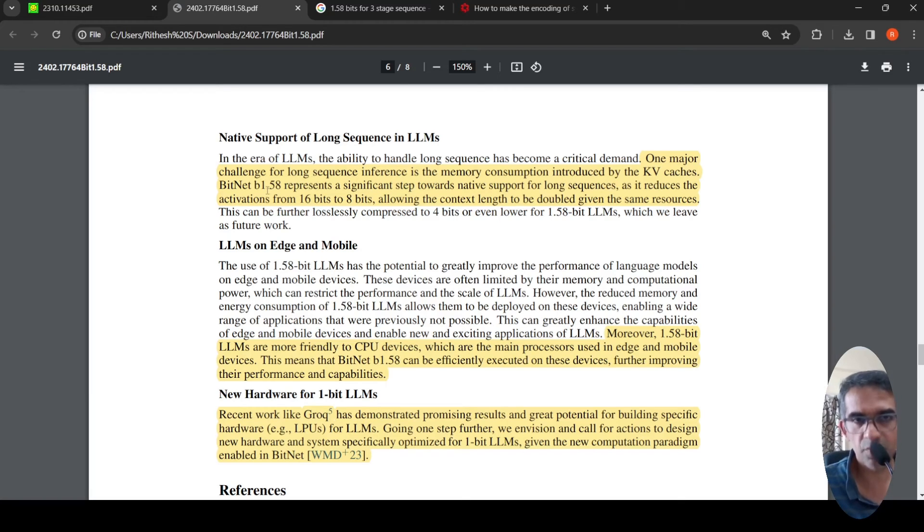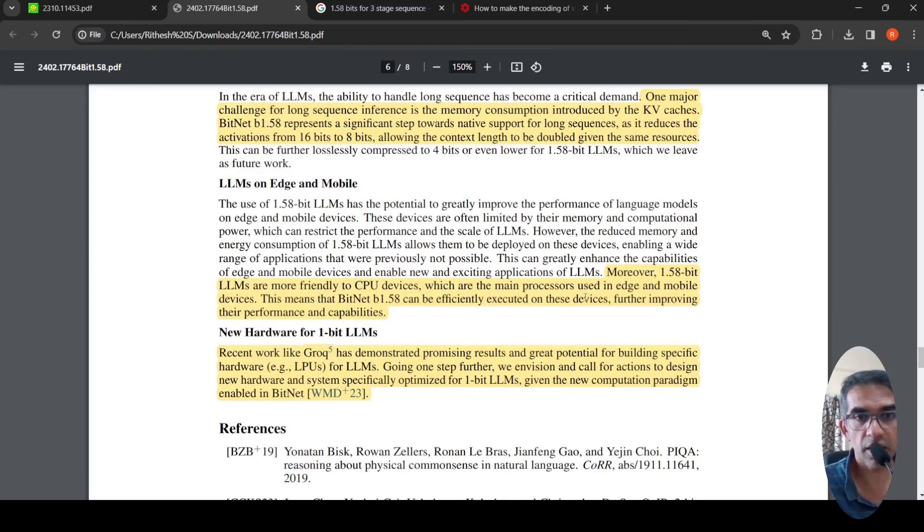So with this, now, as the activation is reduced to eight bits over here, the context length can be increased. One of the major challenge for long sequence inference is the memory consumption introduced by KV caches. But in this particular BitNet B1.58, the activations of this KV caches are reduced from 16 bit to eight bits. Therefore, context length can be doubled with the same resources.